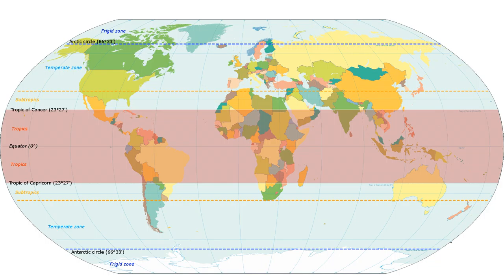In some climate classifications, the temperate zone is often divided into several smaller climate zones, based on monthly temperatures, the coldest month, and rainfall. These include humid subtropical climate, Mediterranean climate, oceanic, and continental climate.